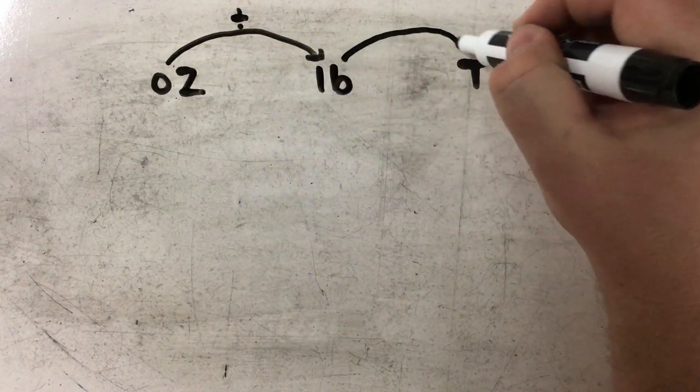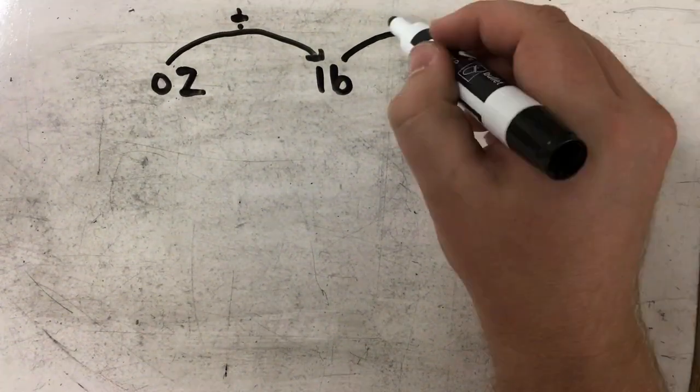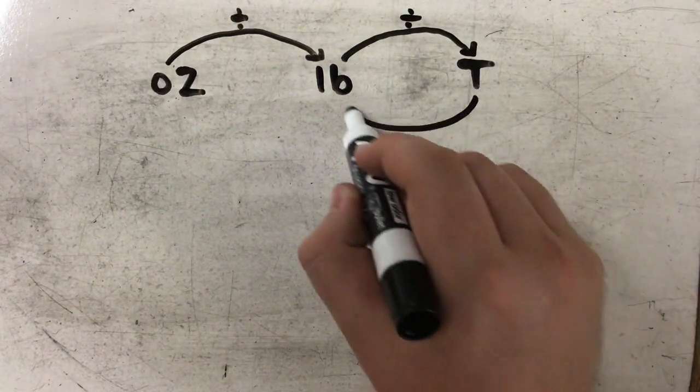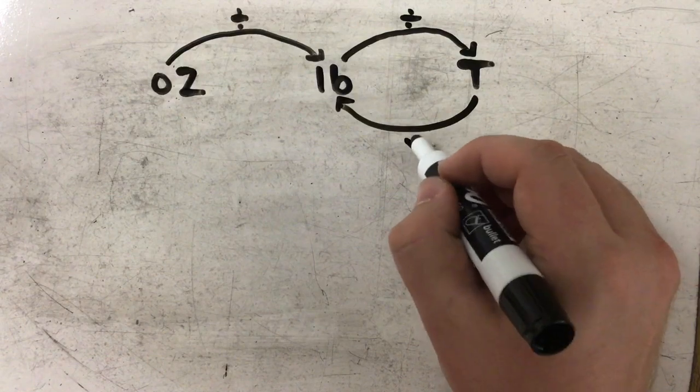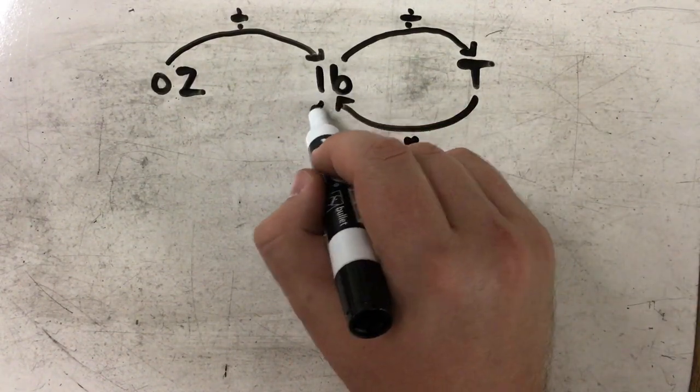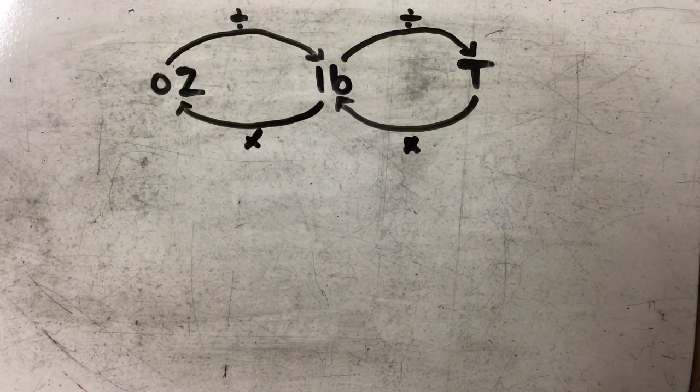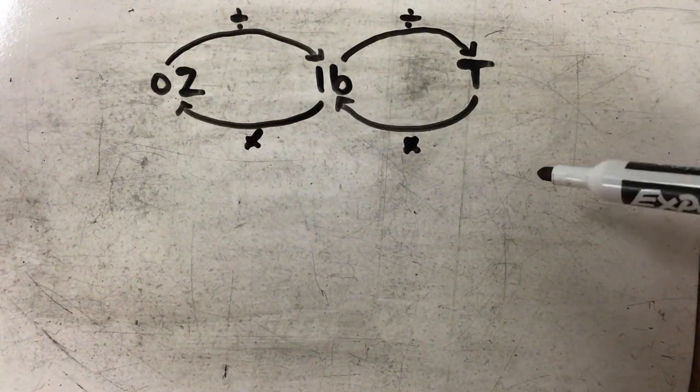And again, if I'm going from a smaller unit to a larger unit, I'm dividing. And if I'm going from a larger unit to a smaller unit, my numbers are getting larger, so I am multiplying.